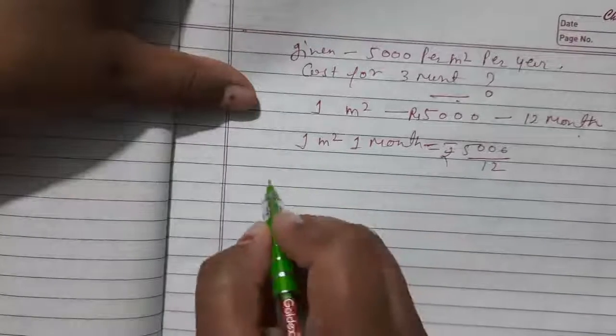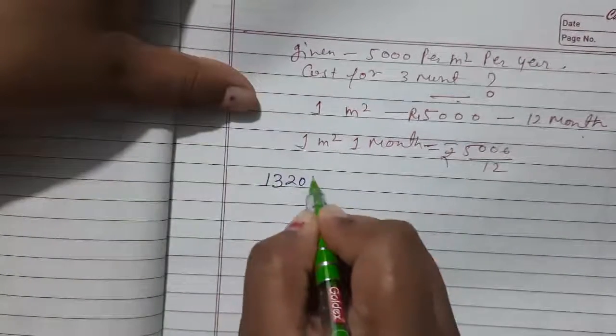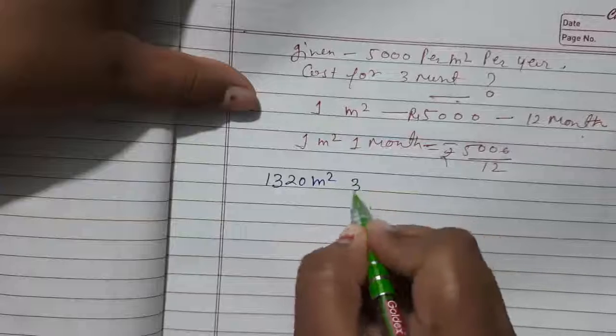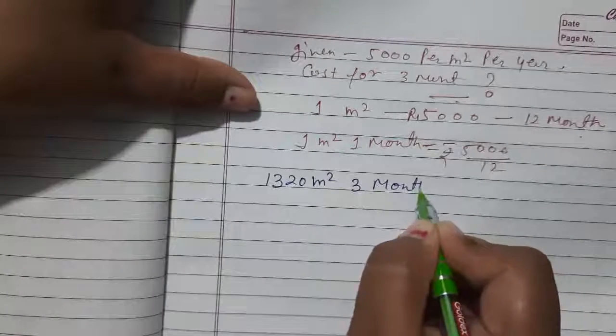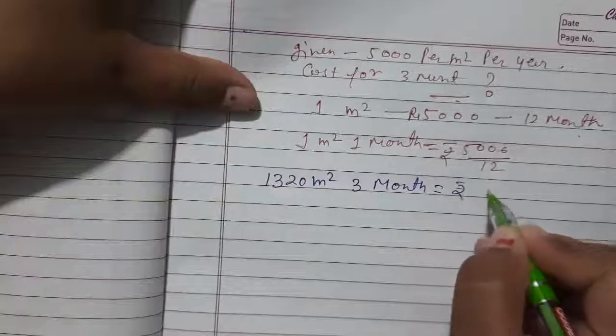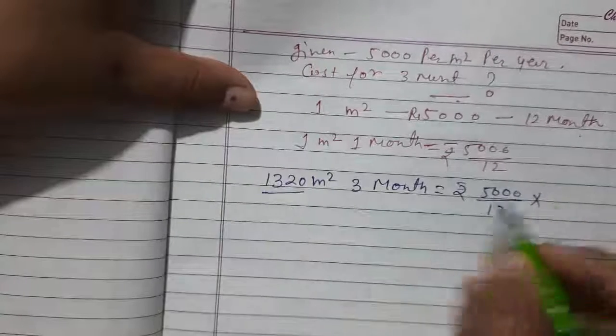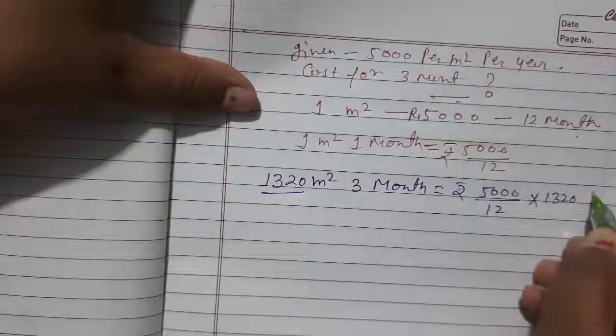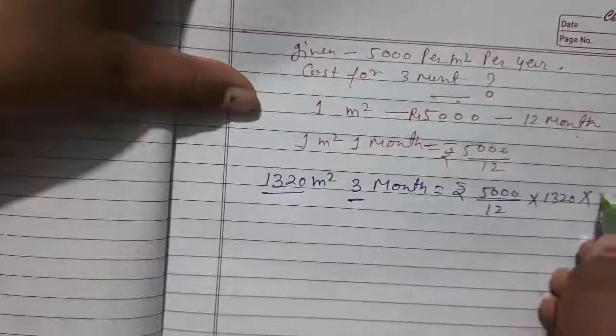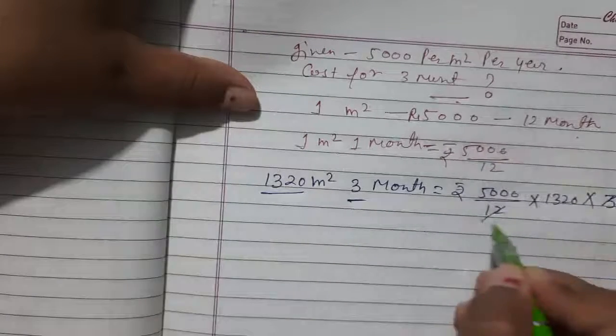Now we have to calculate 1320 meter square for 3 months. So rupees 5000 upon 12, for this area 1320, and for 3 months.